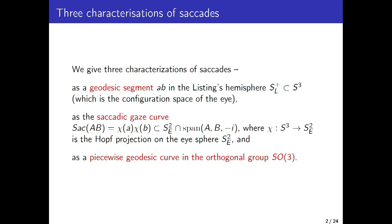One of the main descriptions is the classical Listing's Law, formulated in terms of the Hopf fibration over the two-sphere or three-sphere, which makes it much better understandable than the standard description. In particular, we characterize the saccade as a geodesic segment in the Listing hemisphere. I will explain later what this means: it is a standard two-dimensional hemisphere with the standard metric, and this is the configuration space of the eye.